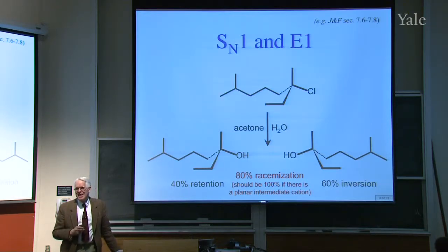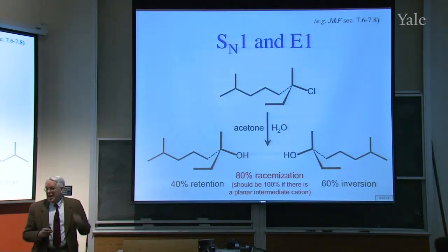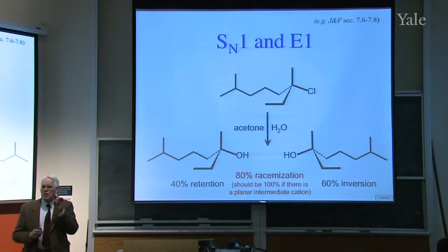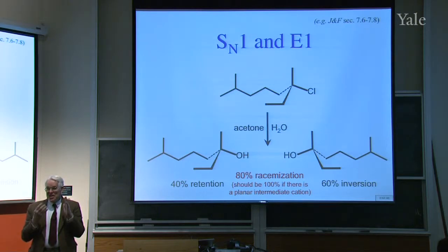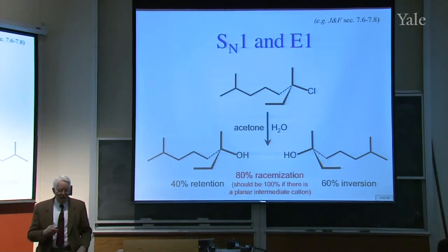It's mostly attacked from the face opposite the chloride ion, where the chloride came from. Why should it be mostly opposite where the chloride came from? Nathan? Steric hindrance? Steric hindrance of what? The chloride. Right. The chloride, even though it's broken the bond, for a certain time is still around, blocking access to the side it came from.